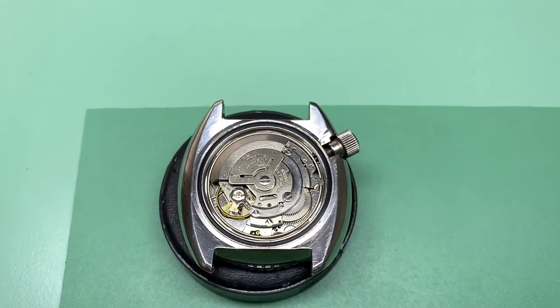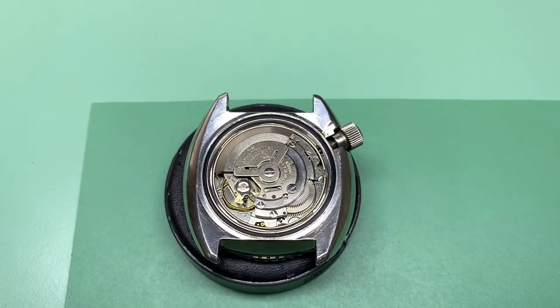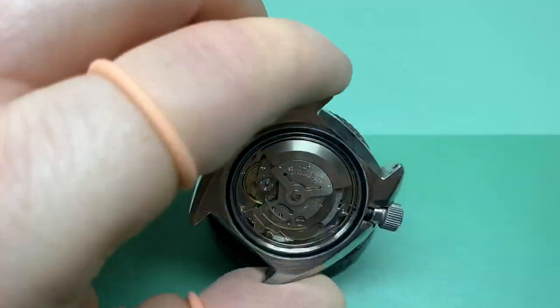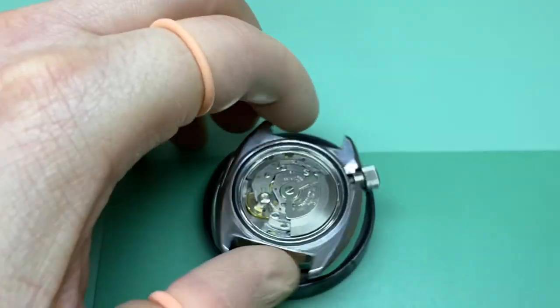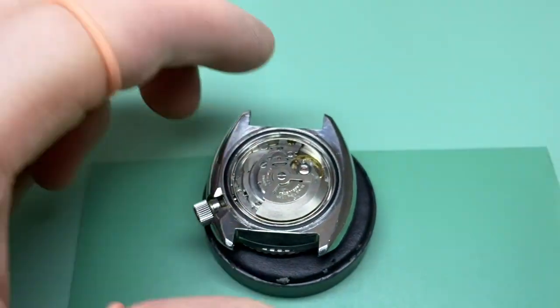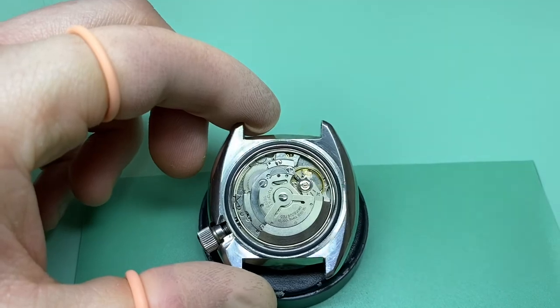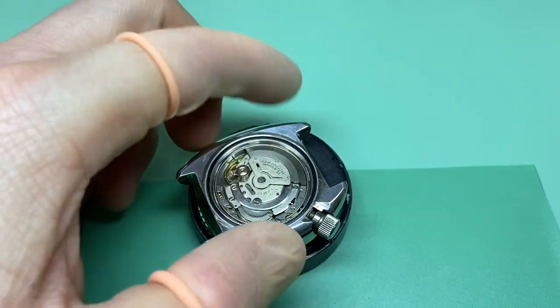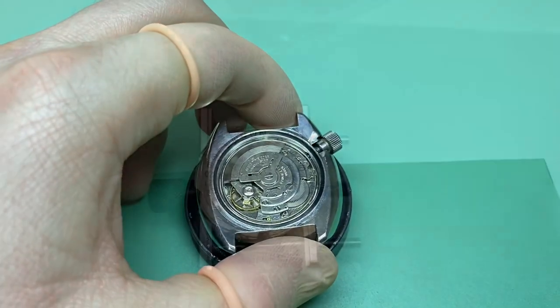The next thing that happens is we open the back of the watch up and inspect what the movement looks like. We can see here that the movement appears to be in pretty good condition and we don't seem to have any major problems. Obviously, it's just in need of a full overhaul. So now we will get to removing the oscillating weight first and then taking off the dial and hands.